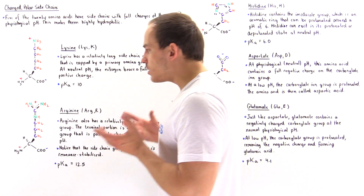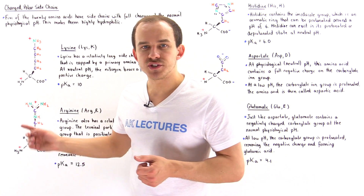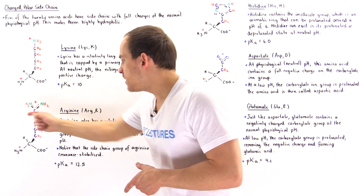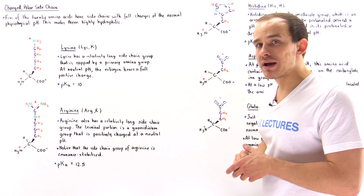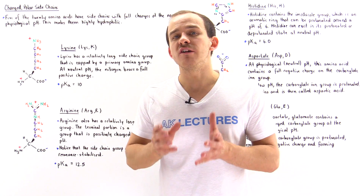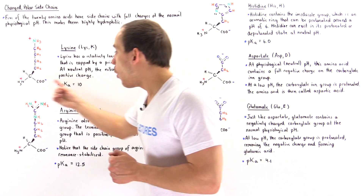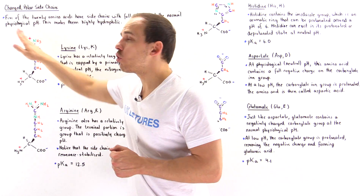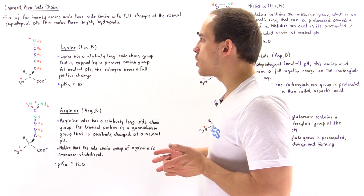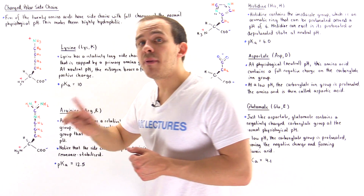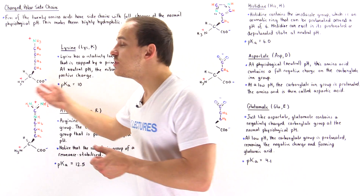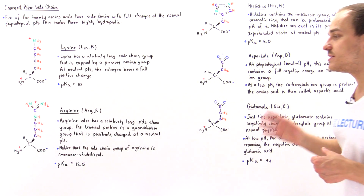Now let's move on to arginine. Arginine, just like lysine, also contains a relatively long side chain group, but instead of having a primary amino group, the group here is known as the guanidinium group, and it has an even higher pKa value of 12.5. This means all of the arginine side chain groups at the normal physiological pH of 7 will be protonated and will have a full positive charge. Unlike lysine, the positive charge in arginine is delocalized among different atoms, which stabilizes the molecule — it is resonance stabilized.